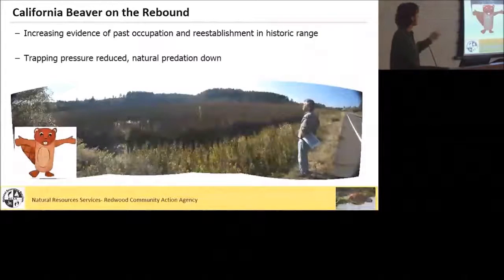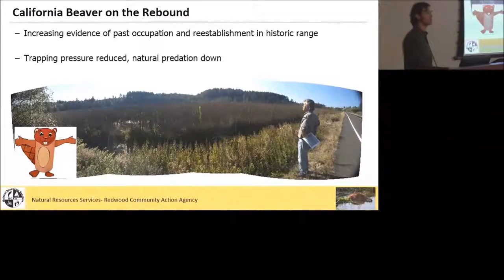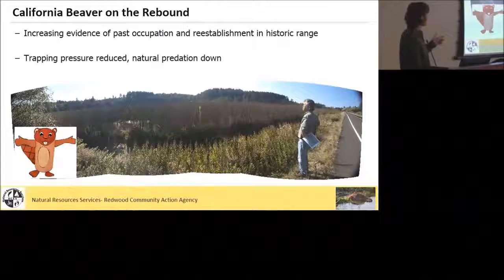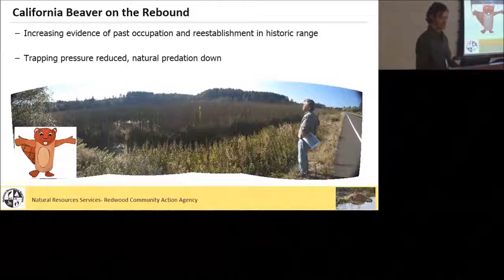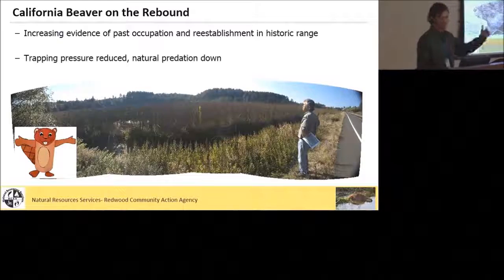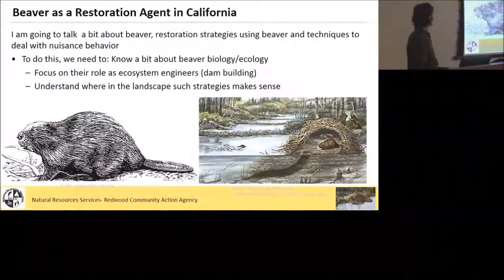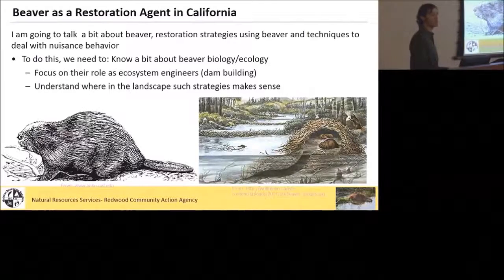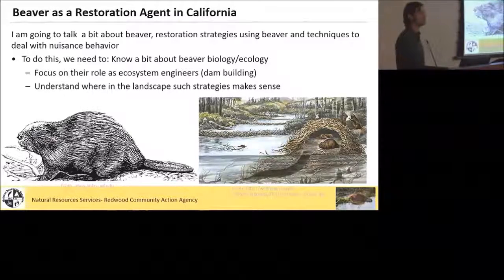Fortunately, California beaver and beaver nationally are on the rebound. There's increasing evidence of their past occupation in a lot of watersheds around here as well as recent reestablishment into areas of their historic range. A lot of that has to do with a reduction in trapping pressure — it just isn't really economically viable to go after beaver for their fur like it used to be — and natural predation is down as well as some significant land use changes in valley bottom areas that have helped bring their numbers back up. Now that they're back on the landscape, they're starting to do what they do, and we have an opportunity to think about working with them in a restoration context. I'm going to talk briefly about beaver, some restoration strategies using beaver, and techniques to deal with their unwanted or nuisance behavior.